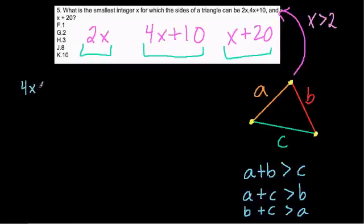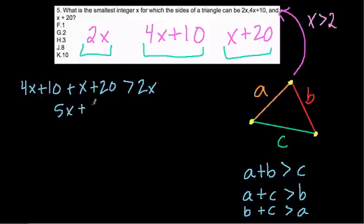So let's try 4x plus 10 plus x plus 20. That has to be greater than 2x. I could have, in the first scenario I added 2x plus 4x plus 10. I didn't want to just reverse that order. I know I'm going to get the same result. So I'm trying to have two other sides altogether and adding them. Here when we simplify we get 5x plus 30 is greater than 2x.